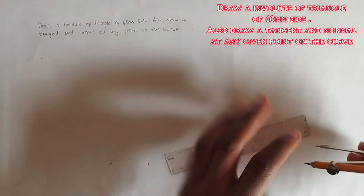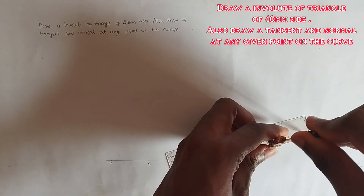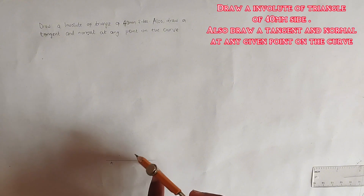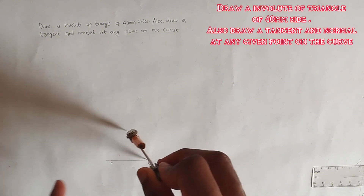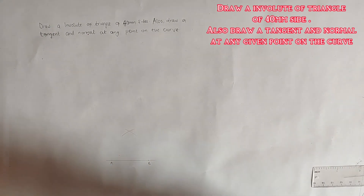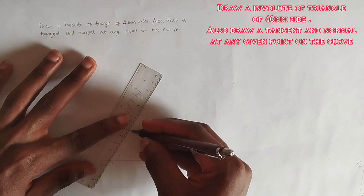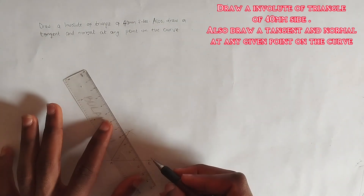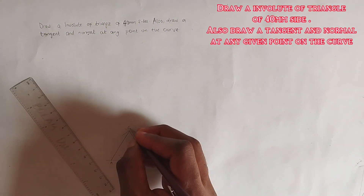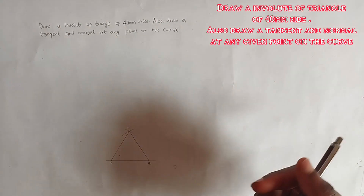Then we pick our compass and measure 40 millimeters. We place the compass at point B and strike an arc, then place it at point A and strike an arc. Then we join these two points together to complete the triangle. We label this third point as point C.